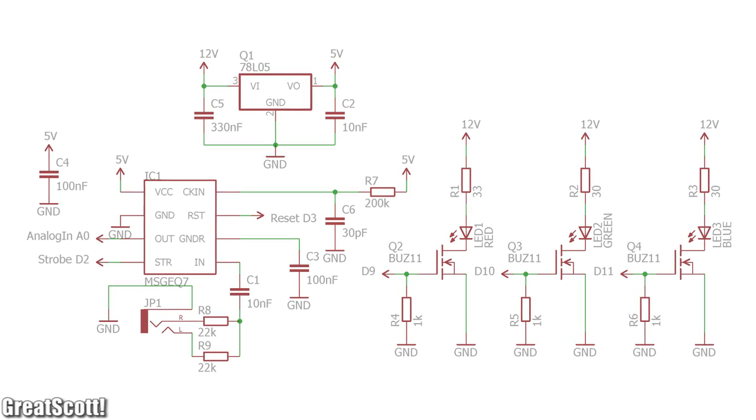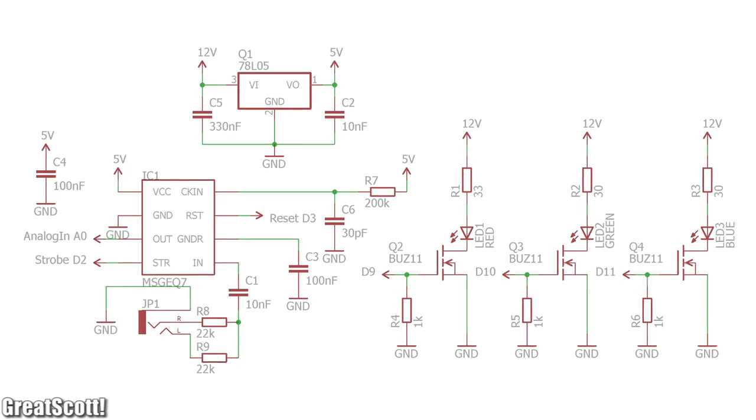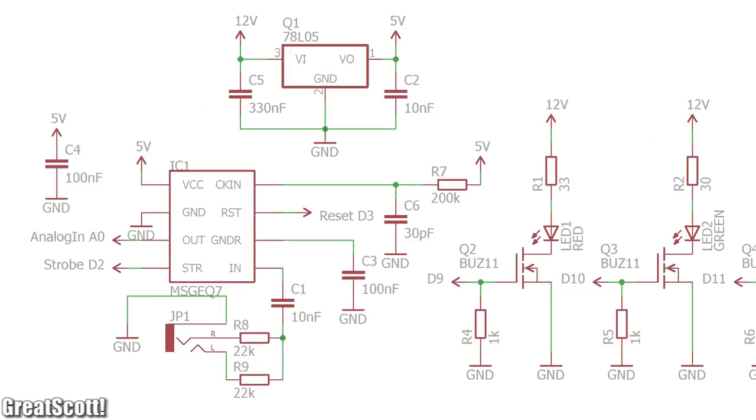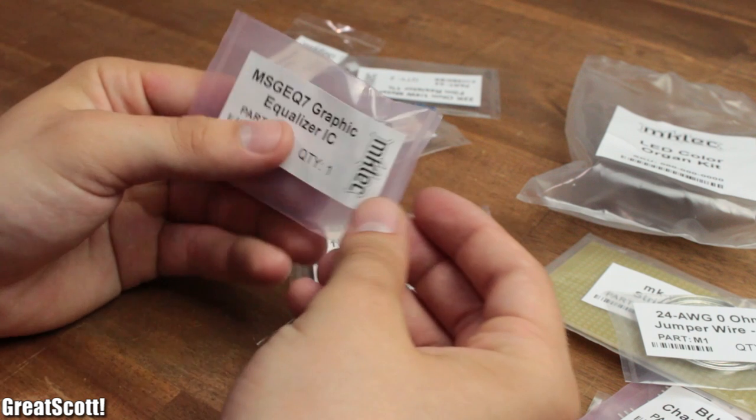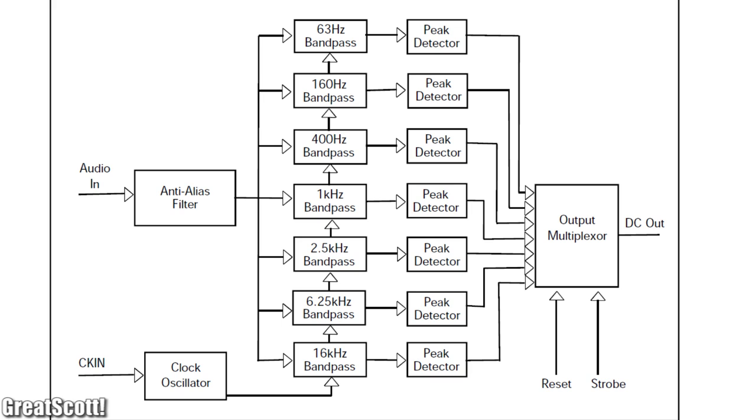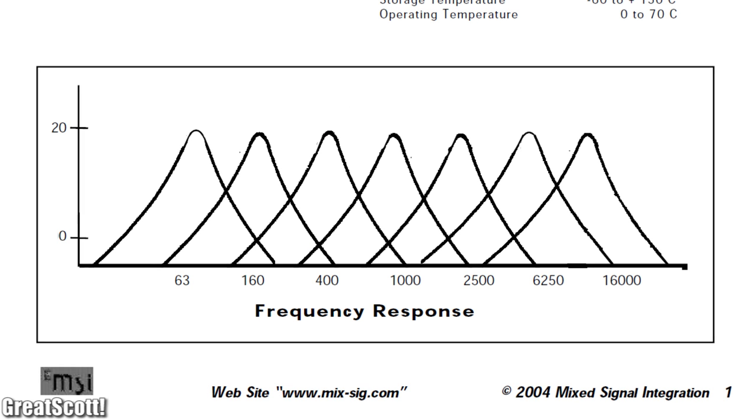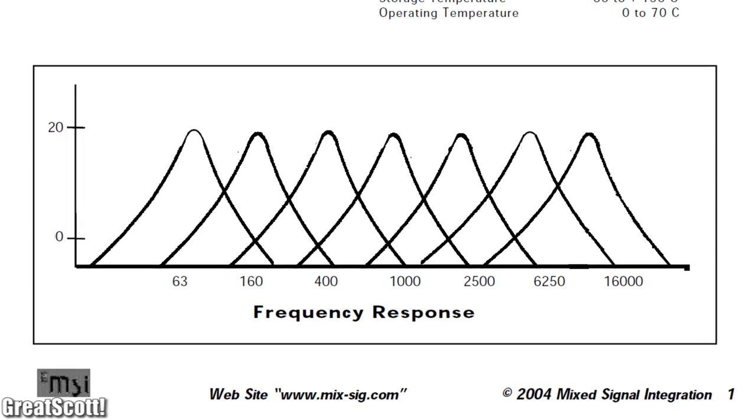Now, let's take a look at the schematic. It might look confusing, but let me explain. The core of the build is this MSGQ7 IC, which uses seven bandpass filters in combination with a peak detector, which only lets a certain frequency and close ones nearby pass through.